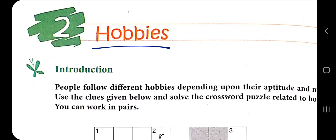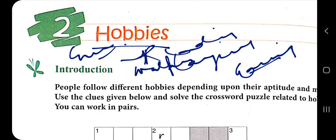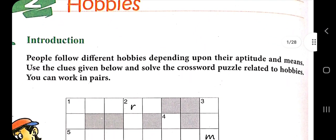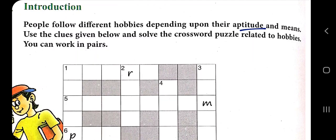There are many different types of hobbies perceived by different people according to their choices — like few people enjoy reading, few enjoy playing, some enjoy gaming. Hobbies like gardening, singing, and walking are all examples. In this chapter we will understand a new kind of hobby. People follow different hobbies depending on their aptitude, which means choices.